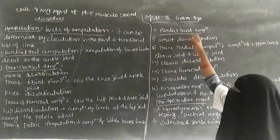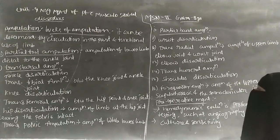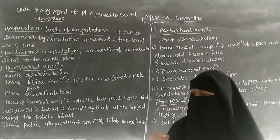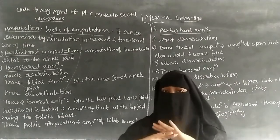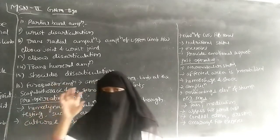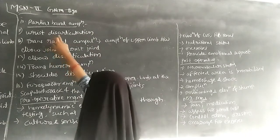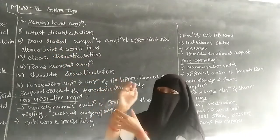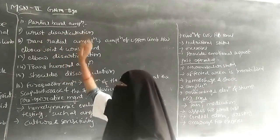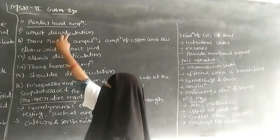Next is partial hand amputation. In partial hand amputation, only half of the fingers can be removed — it involves the wrist area and partial finger removal. The next level is wrist disarticulation, where up to the wrist the hand should be removed by the amputation.